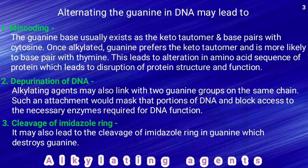This leads to three effects: miscoding, depurination, and cleavage of the imidazole ring. Miscoding occurs because guanine in DNA normally exists as a keto tautomer and pairs with cytosine (A-T, G-C). But when alkylated, guanine prefers to pair with thymine instead of cytosine. This leads to alteration in the amino acid sequence of protein and disruption of protein structure and function — called miscoding.